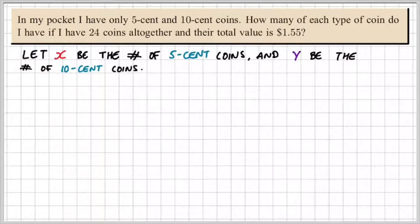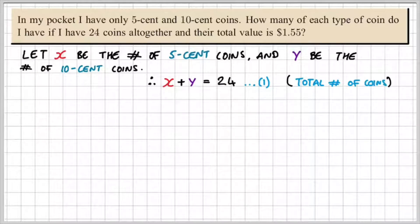So we'll let x be the number of 5 cent coins, and y be the number of 10 cent coins. So we can set up an equation and say x plus y is equal to 24, and that's equation 1. That represents the total number of coins in my pocket.